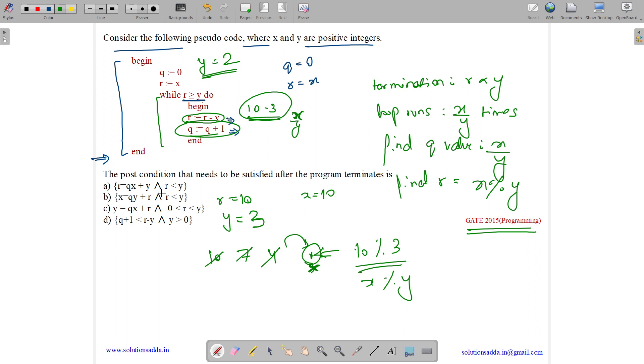Now we have to tell what is the post condition. Initially checking if r equals qx plus y. Let us see, what is q? q we have incremented 10 by 3 times, which means 3 times. No, this is false.